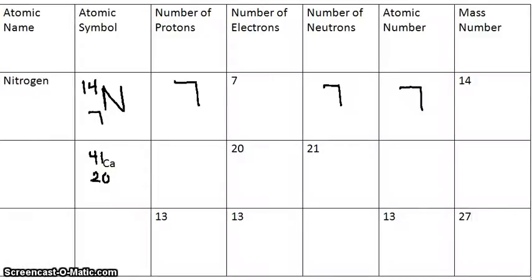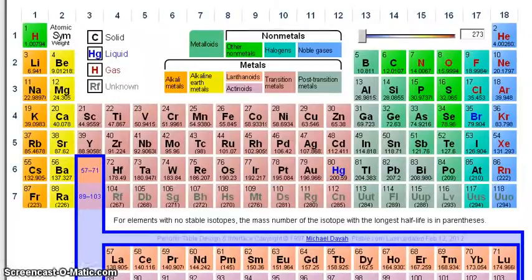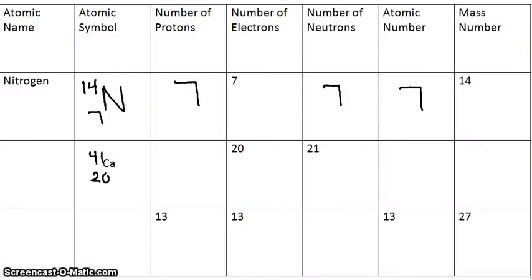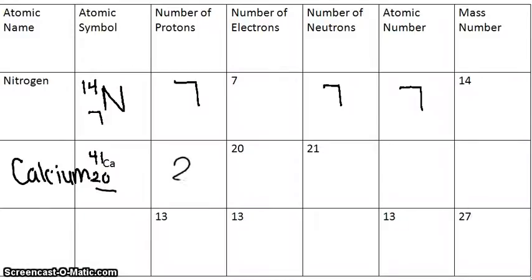In our next example, we aren't given the atomic name, but we are given the atomic symbol with its mass number and its atomic number. So you go to your periodic table and you see Ca. You have Ca over here, which is calcium. So you can go back to your chart and write calcium. Your number of protons is always your atomic number, so your atomic number is 20, and you can write 20.